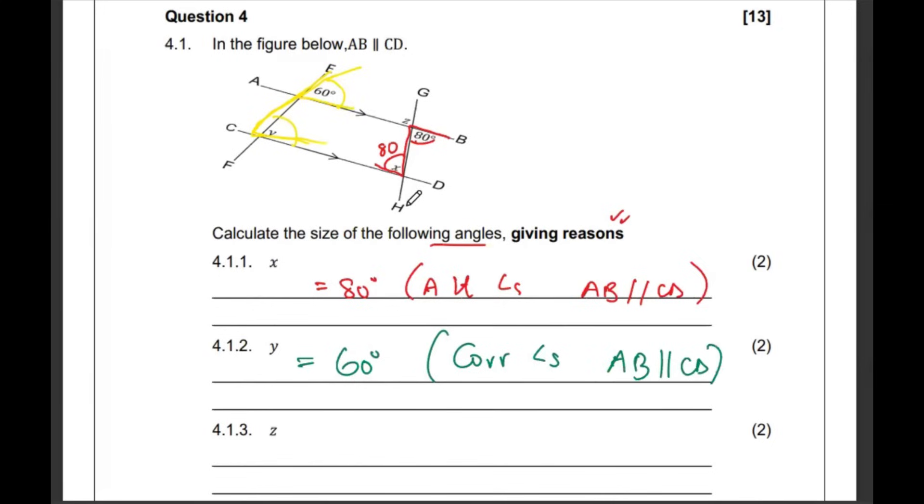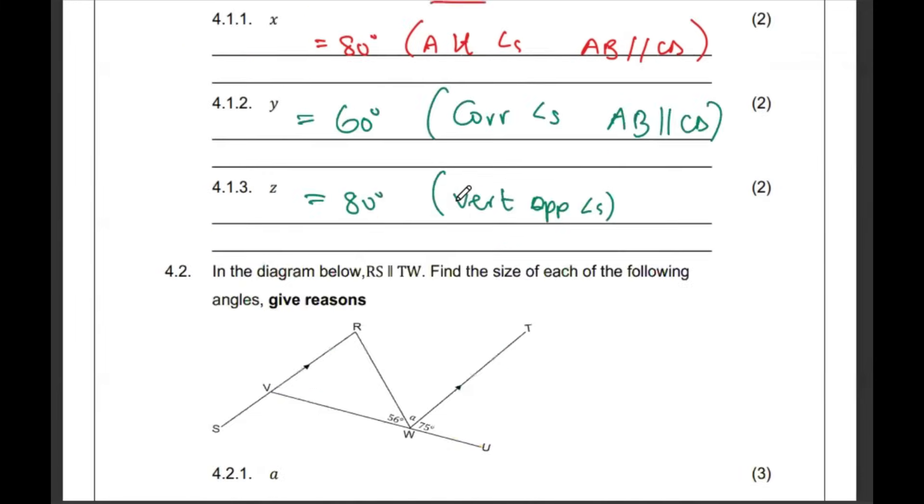Then we need to look for z. So, this is 60 where z. Z is somewhere here. So, z is going to be 80 because the z and the 80 are vertically opposite. That is how we would have obtained those six marks.